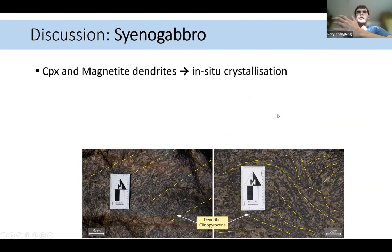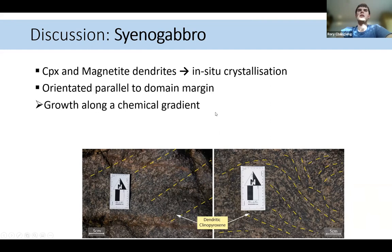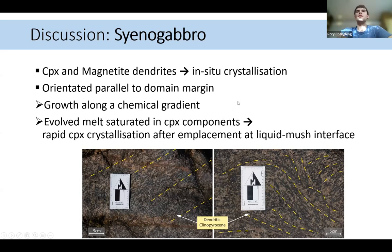If we look at the syenogabbro, this is a bit more simplistic, we have the dendrites of clinopyroxene and magnetite. And this is more classic in situ crystallization, if there's anything more dynamic going on here, then these crystals would simply disintegrate and not show this clear elongation. And this is generally orientated parallel to the main margins. So we might see this growth along a chemical gradient, which may be occurring if you have more evolved melt in the center with more clinopyroxene components, we see this rapid crystallization after the central portion is in place at this liquid mush interface. And so this is what may be giving the syenogabbro this dendritic texture.